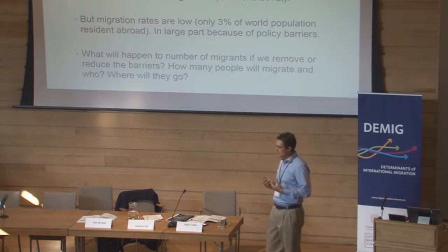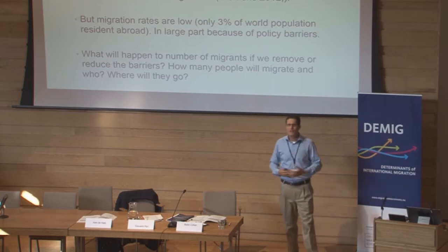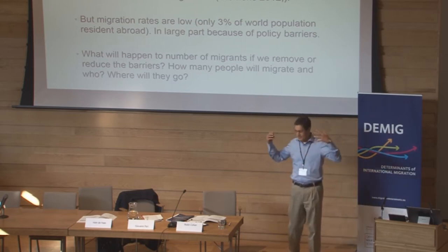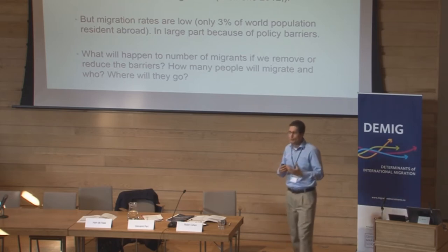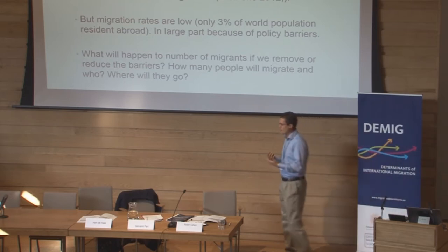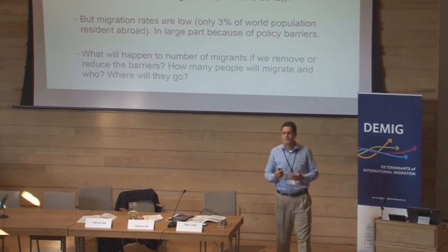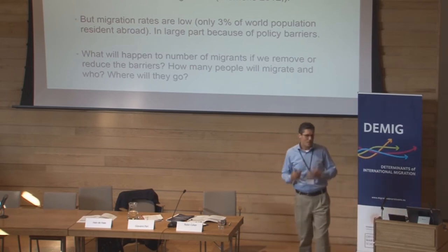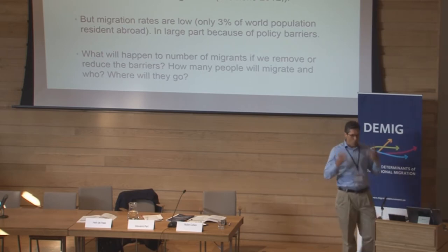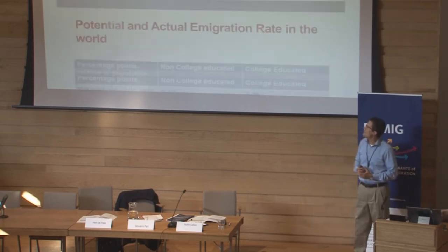The perception is that a large part of this lack of mobility may be due to policy barriers. So the question is: what will happen, or can we learn something meaningful and interesting about what will happen if we reduce or significantly change these barriers? We would like to know what will happen to the number of people who migrate, the selection of people who migrate, and where they will go — a first-order question for economists and migration studies.